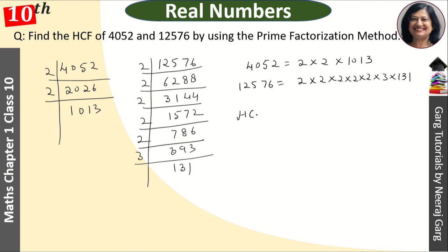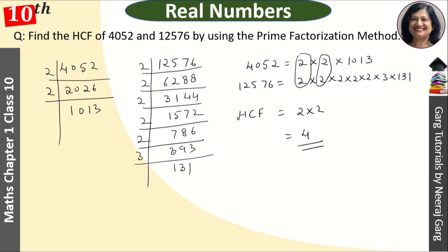The highest common factor is what they share. The HCF is 2 × 2, which is equal to 4. This is our answer. I hope you have understood the question properly.